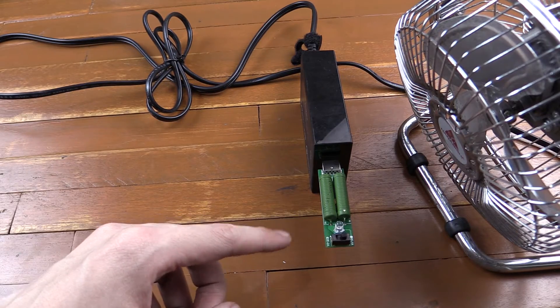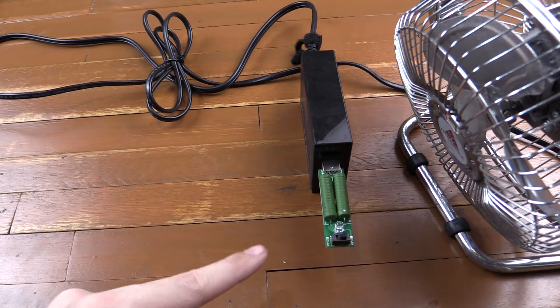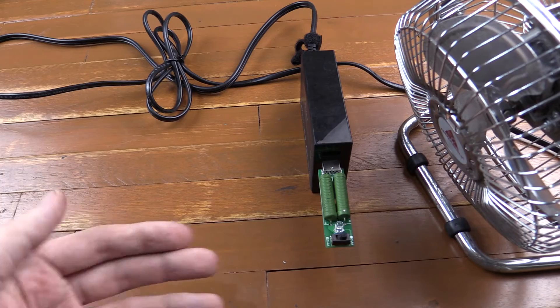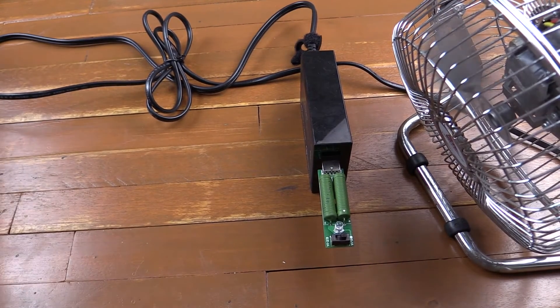So the dummy load is now cooled down. We're going to do the same experiment but this time we're going to have a fan blowing over it to see what happens and what kind of temperatures we hit and how fast we hit them. So I'll start by turning the fan on and then I'll turn on our dummy load.